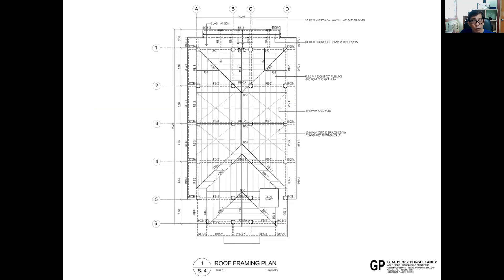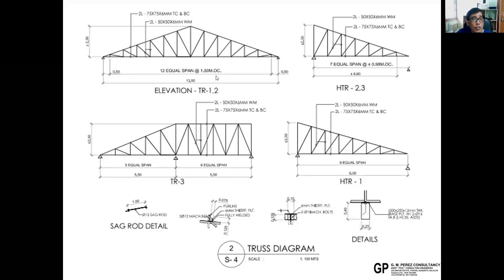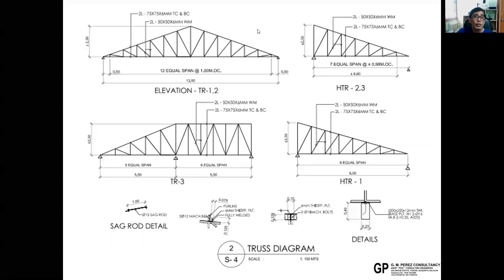The truss length in the example is about 13 meters and the height is approximately 2.3 meters. The section drawing shows how to represent the truss system and the details of the truss connections at each node. This concludes the lecture.